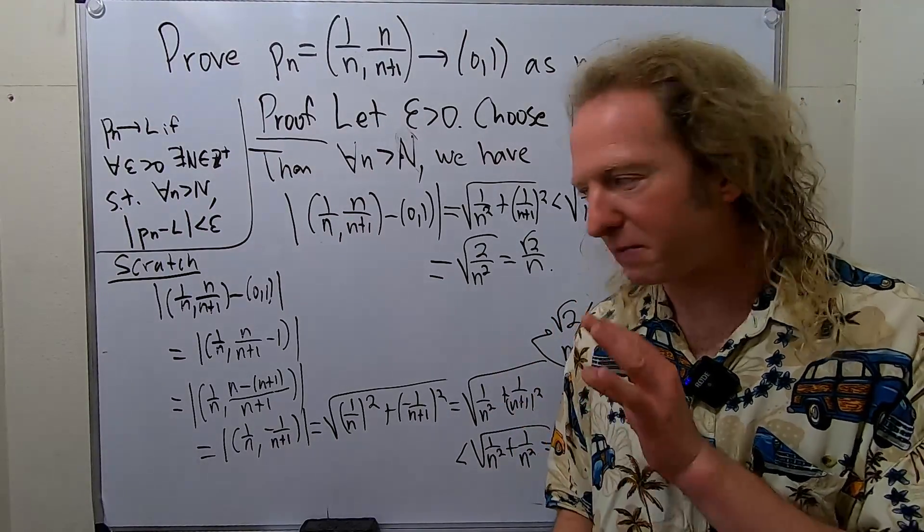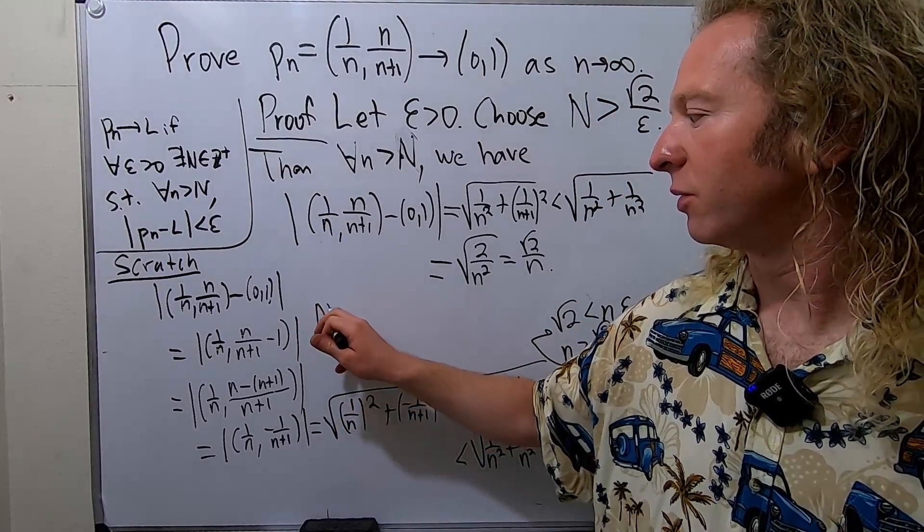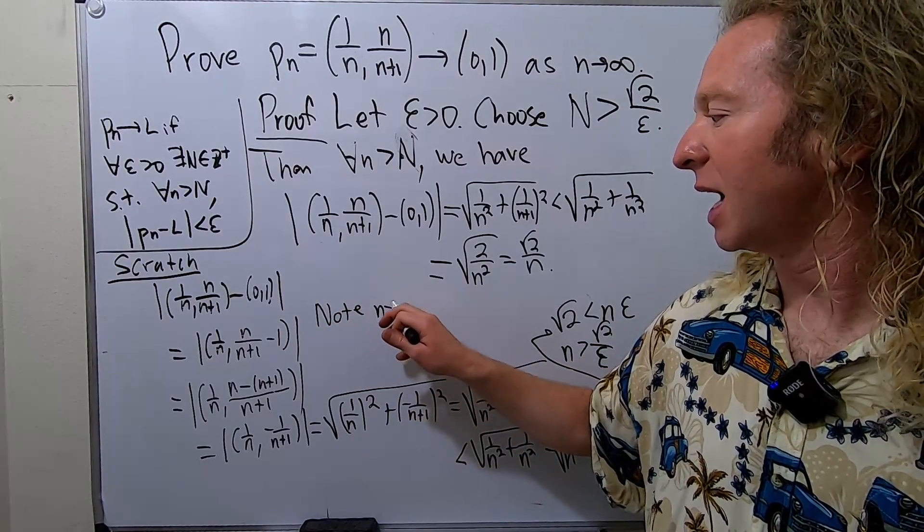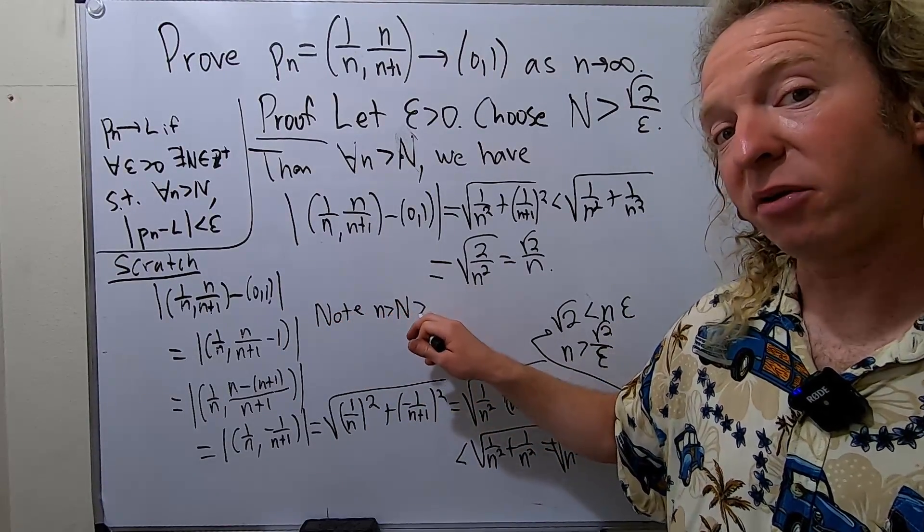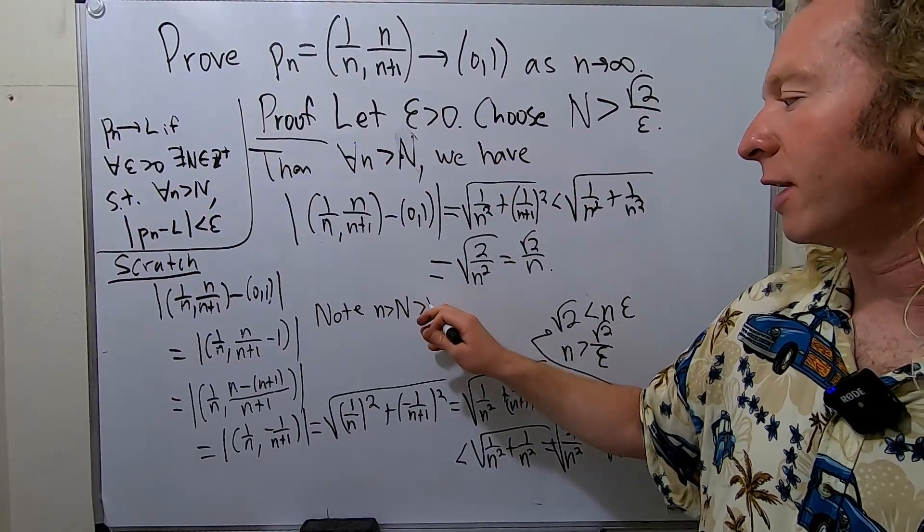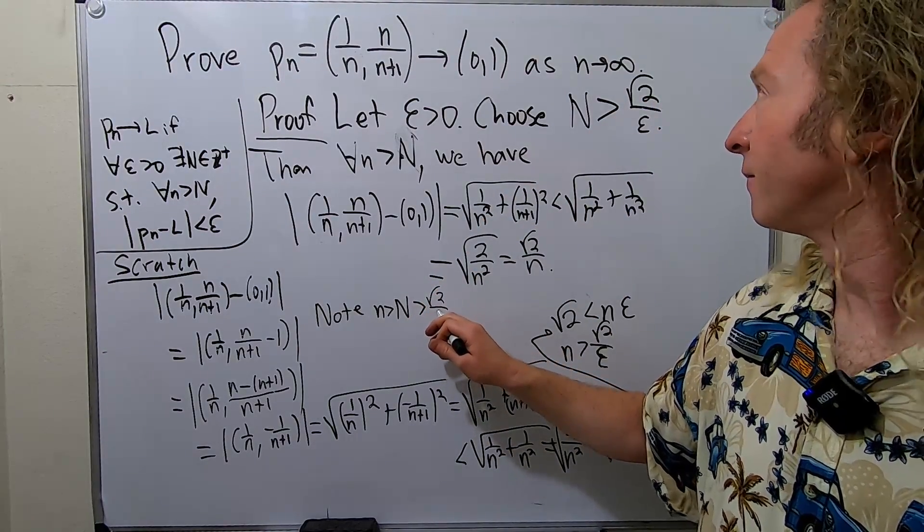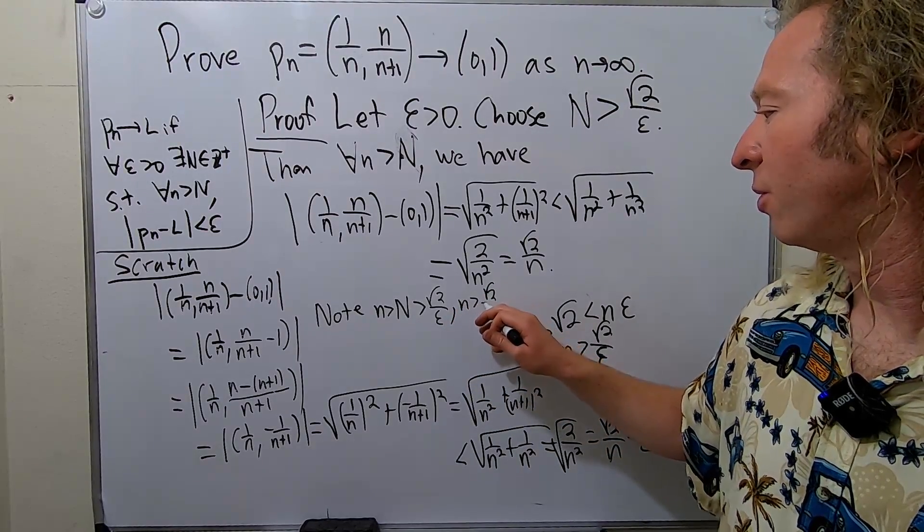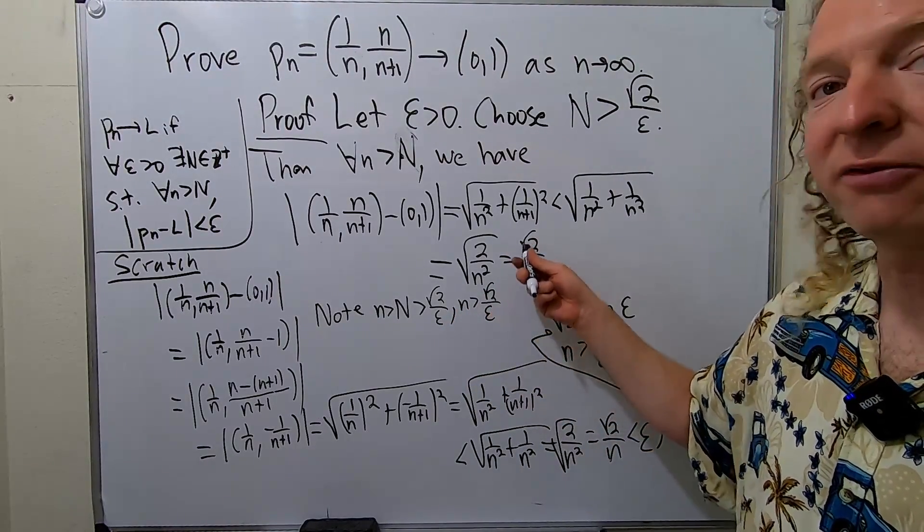And just to emphasize that everything is okay, let's reiterate what we just did. Let's make it match. So note, this is the beautiful part, n is bigger than capital N which is bigger than the square root of 2 over epsilon. So that means that n is bigger than the square root of 2 over epsilon. So we want to work it out and solve for this.